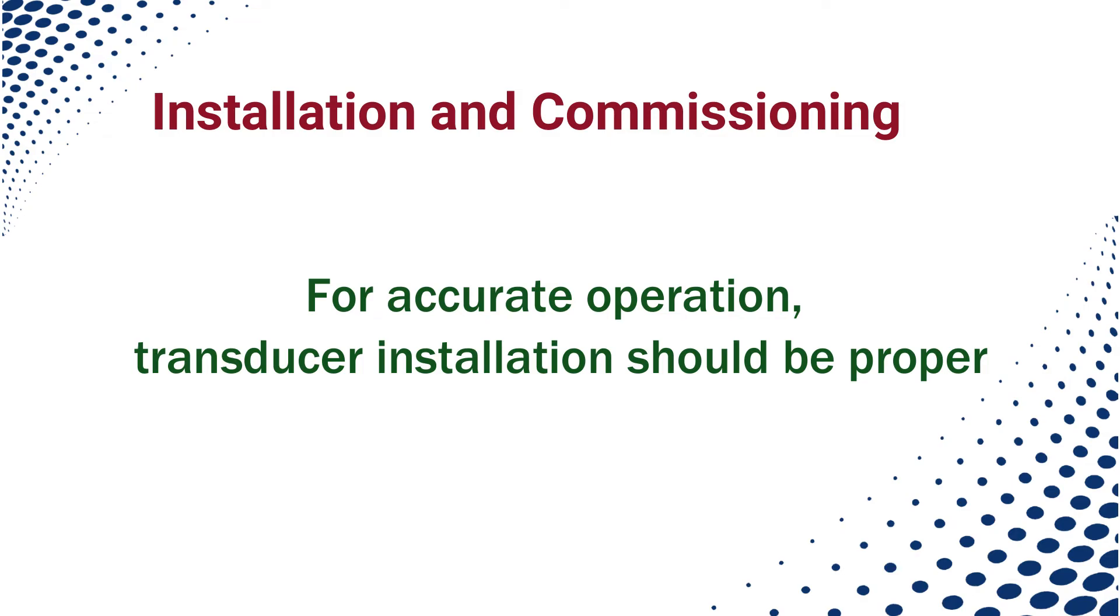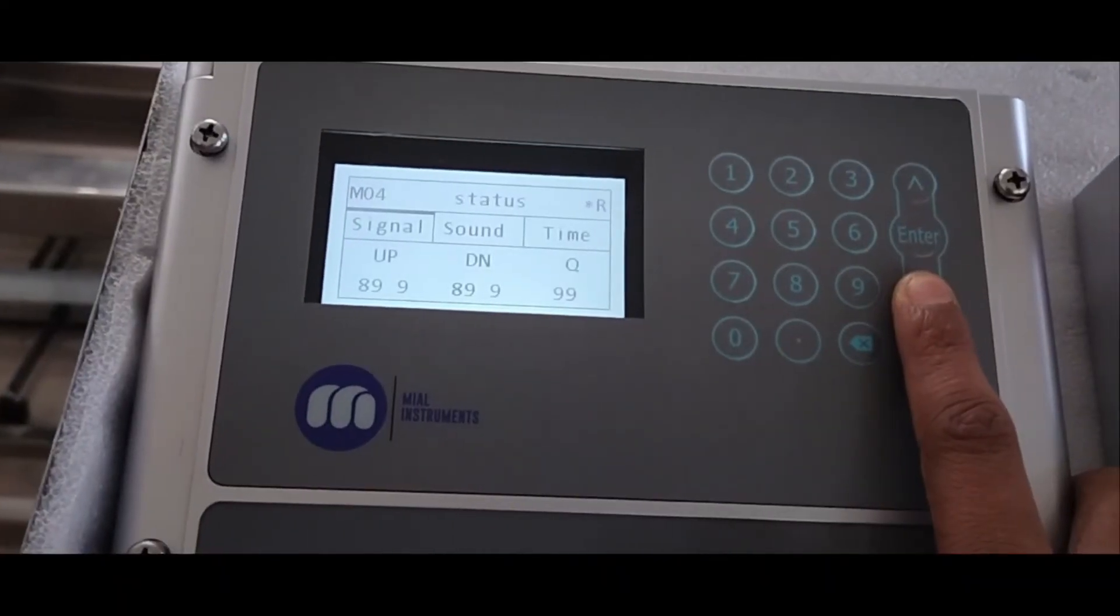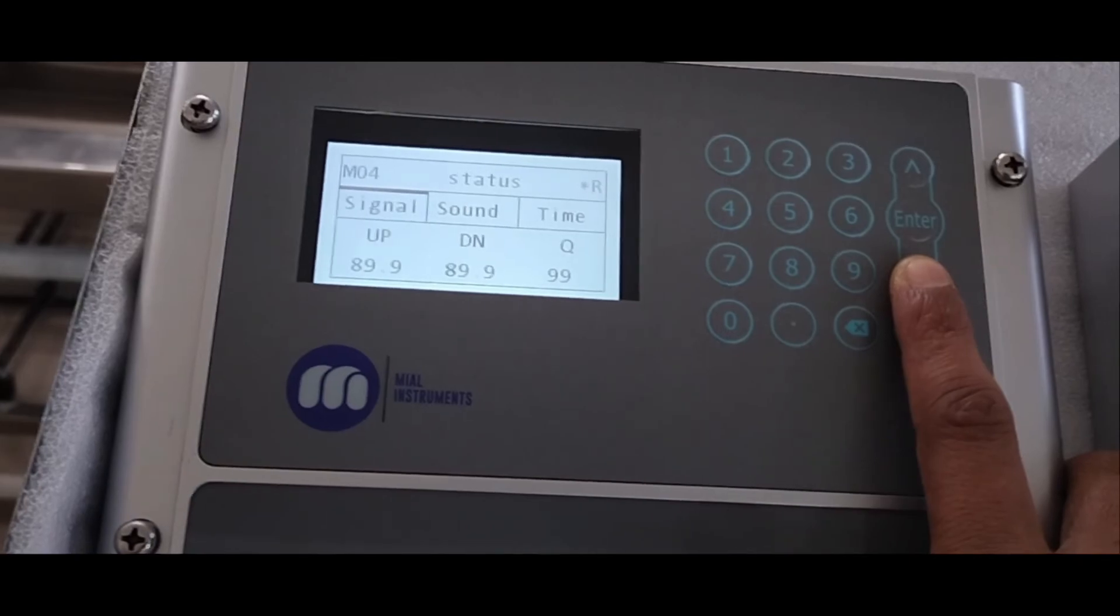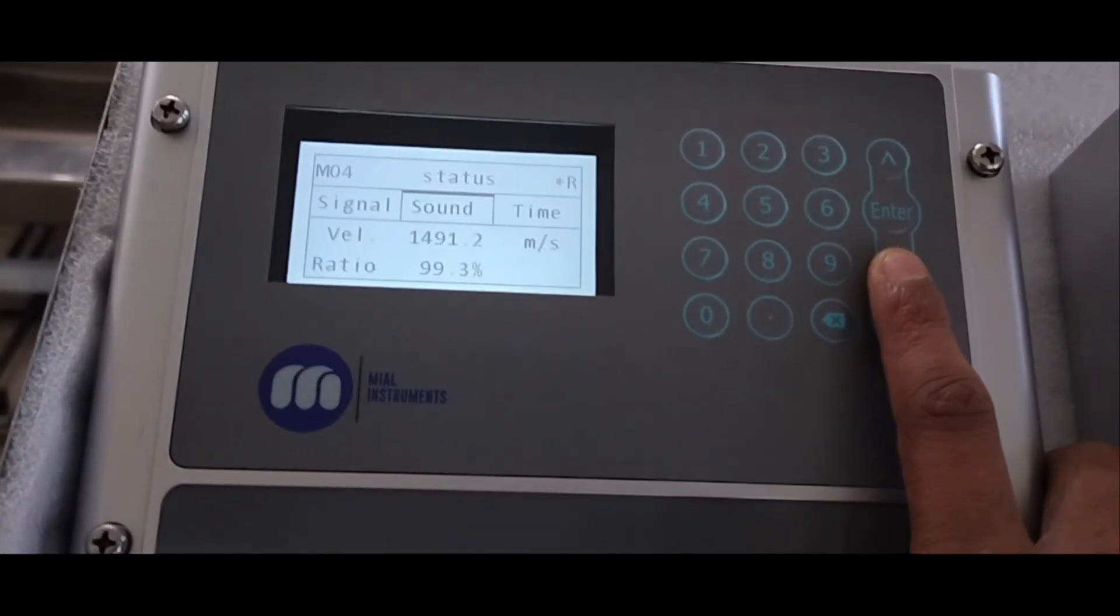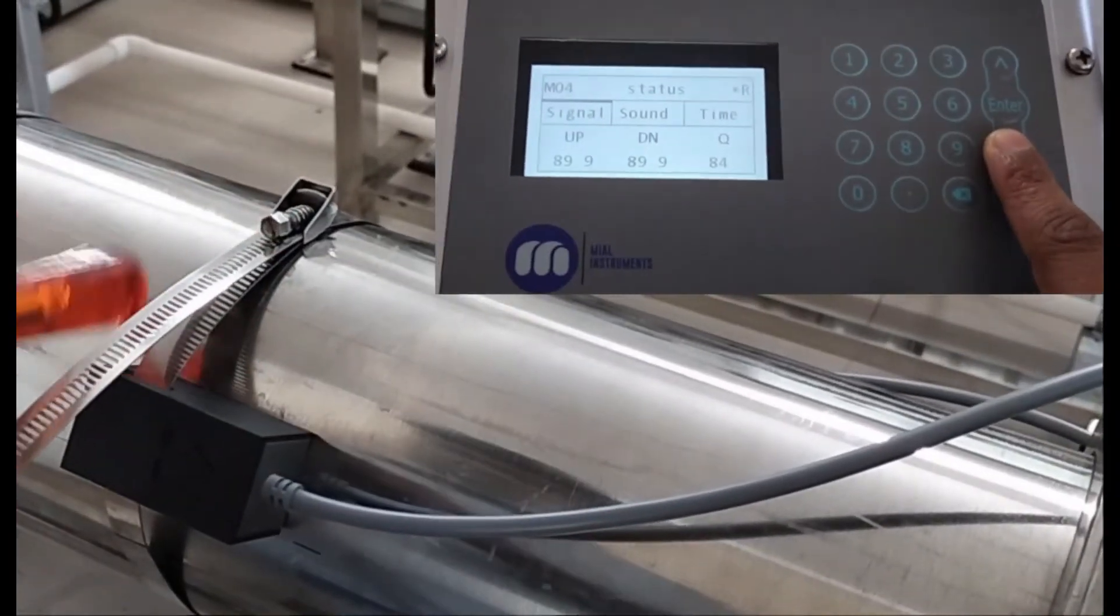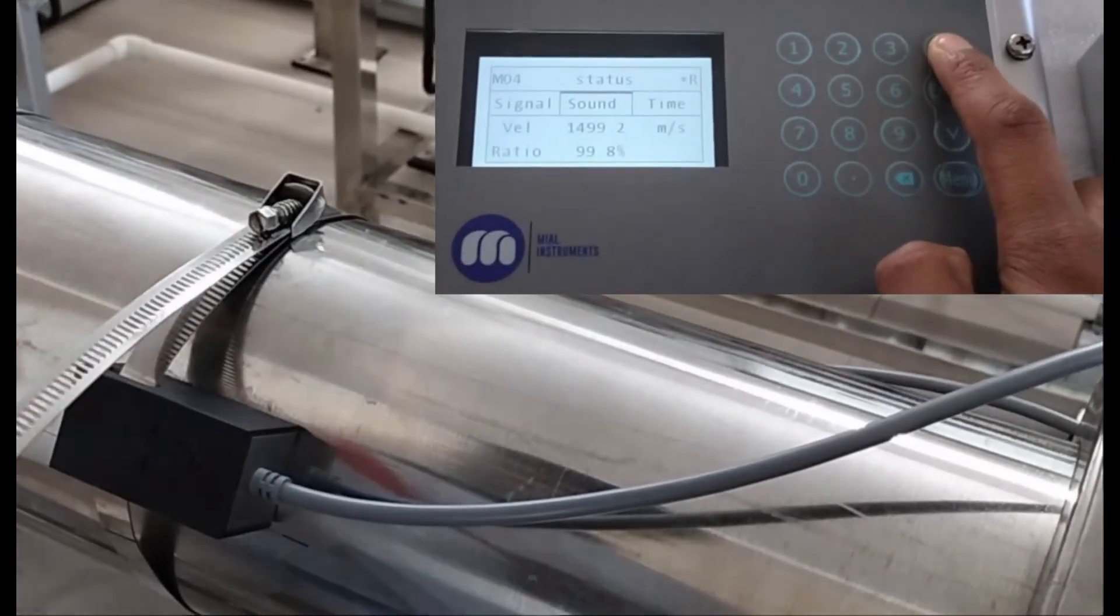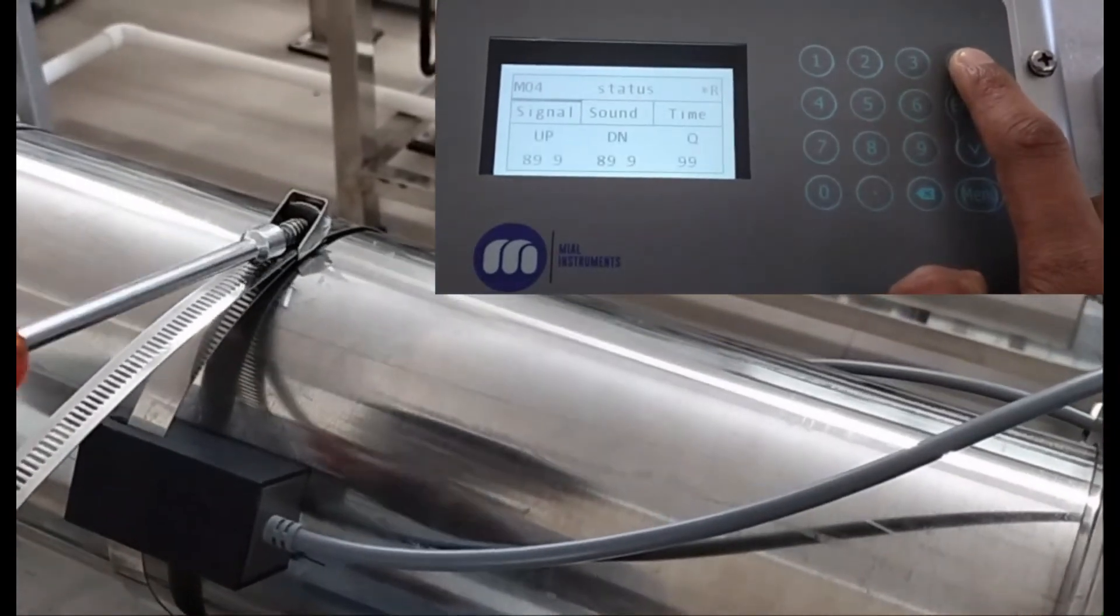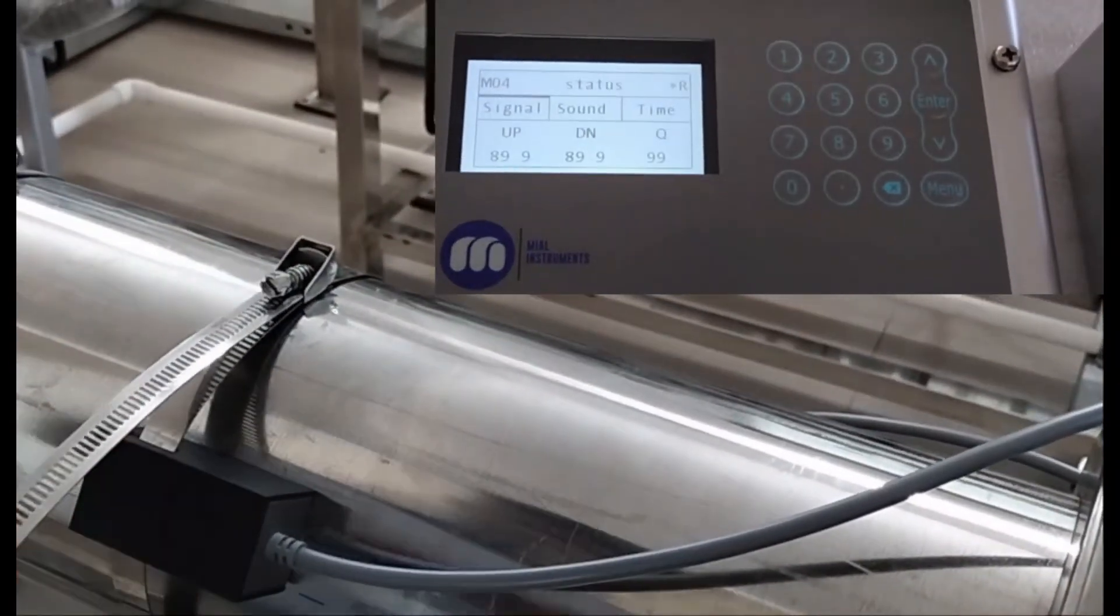First, switch on the power supply and energize the meter display. Then press the down button just below the enter button and go to menu 04. Q value is short for signal quality. It varies from 0 to 99. 99 represents the maximum signal quality. In the next tab, just press the down button. The ratio is the transit time ratio and it should be 100 percent. To get the mentioned values, adjust one of the sensors as shown in the video. Tighten the pipe strap after attaining the desired values. Thank you.